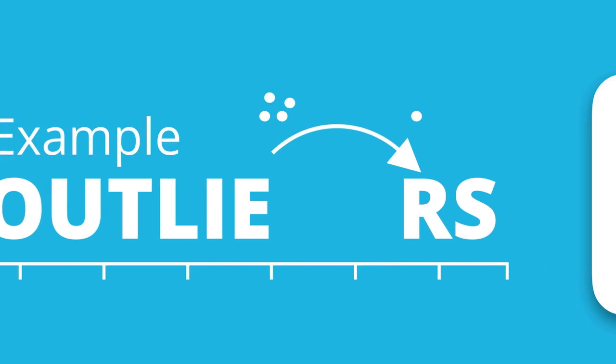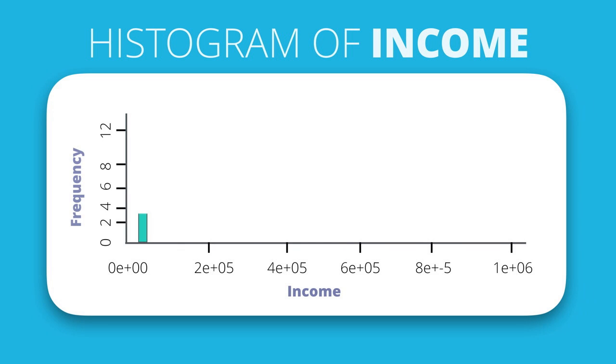Here we have some income data that's spread out in a histogram to show how the values are distributed. It's apparent that most of the values representing people's income are within the zero to 100,000 range.